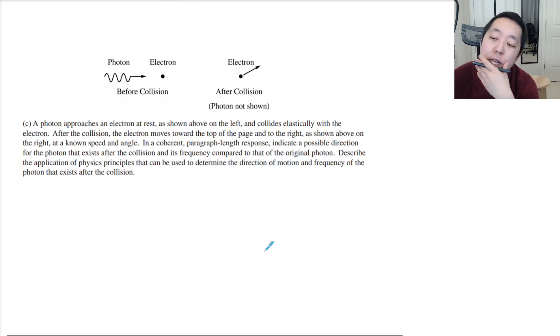A photon approaches an electron at rest as shown above on the left and collides elastically with the electron. After the collision the electron moves towards the top of the page to the right as shown above at a known speed and angle. In a coherent paragraph length response indicate a possible direction of the photon that exists after the collision and its frequency compared to that of the original photon. Describe the application of physics principles to determine the direction of motion and frequency of the photon that exists after the collision.